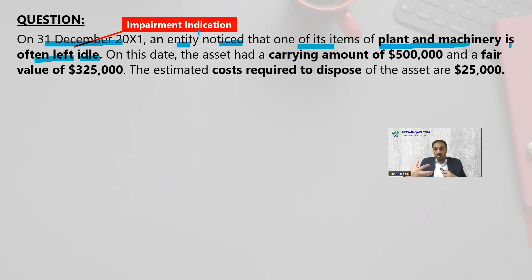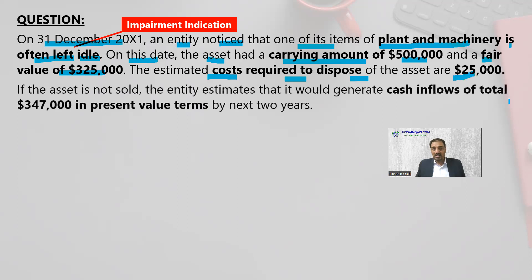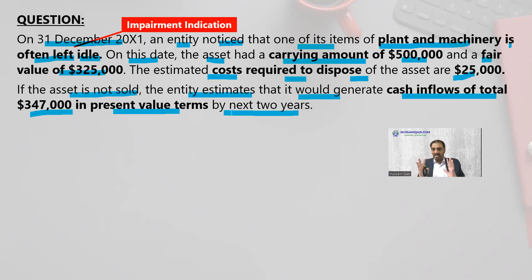For impairment testing, we need to identify and determine the values. On this date, the asset had a carrying amount of 500,000 and a fair value of 325,000. Estimated cost required to dispose of the asset: 25,000. And if the asset is not sold, the entity estimates it would generate cash inflows of total 347,000 in present value terms over the next two years. So the complete information for impairment is available.